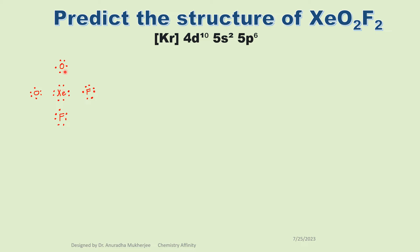Xenon shares 2 electrons with oxygen to form double bonds and shares 1 electron with fluorine to form single bonds. So this is the structure of xenon O2F2. Xenon has 2 double bonds with 2 oxygen atoms, 2 single bonds with 2 fluorine atoms, and 1 lone pair.